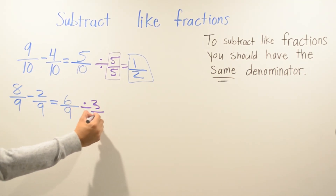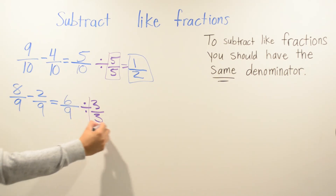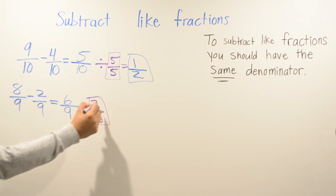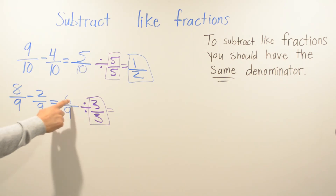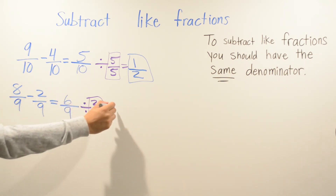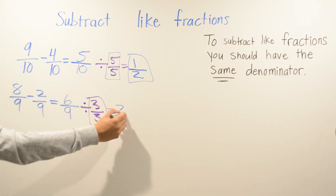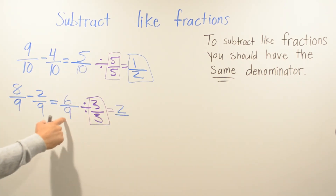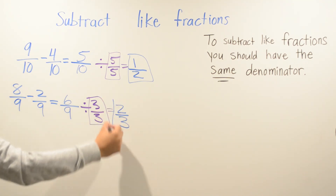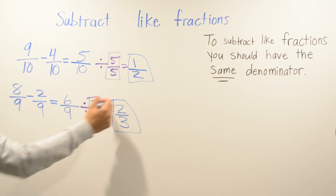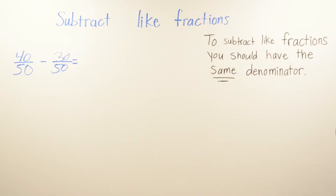We simplify by 3. 3 goes into 6 two times, and 3 goes into 9 three times. So our answer is 2 thirds.